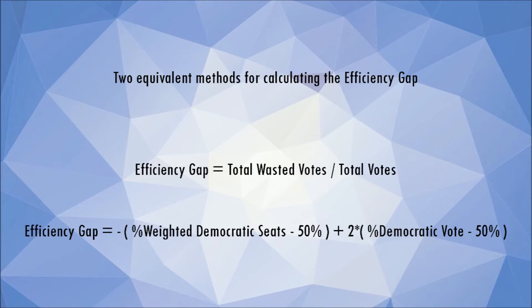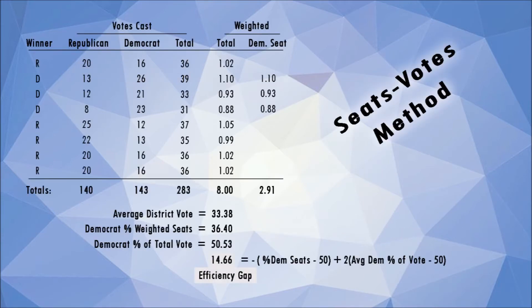Seats-votes equations have been around for decades and are commonly of this form, where there is a percentage of seats minus 50% and a percentage of votes minus 50%. We will use the seats-votes equation first to calculate the efficiency gap, and then use the wasted votes method to confirm our answer. The example we will use is a scaled-down version of the 2012 Pennsylvania Congressional Election results from Ballotpedia.